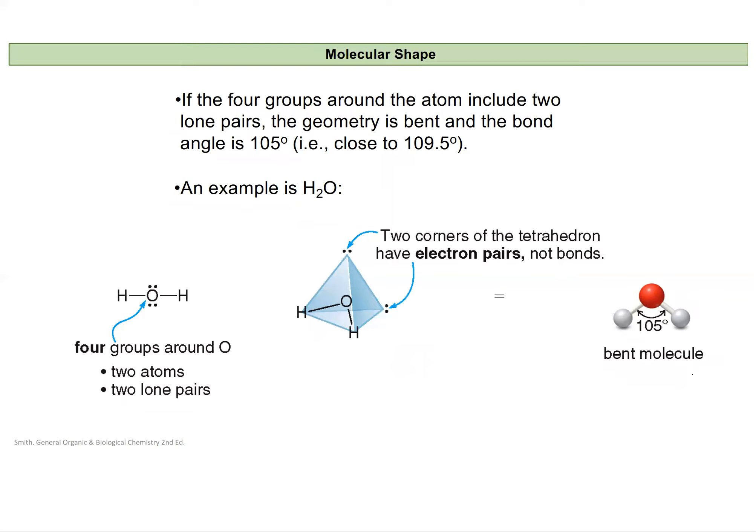Now if we have two lone pairs and two bonded atoms, we still have four things that are repelling each other around this central oxygen atom. And so they'll still be about 109.5 degrees apart. And again, because we only can see the atoms, we're only going to name this based on the atoms that are bonded. And so we just see these hydrogens here and this oxygen at this angle of about 105 to 109 degrees. And so we'll call this geometry bent.